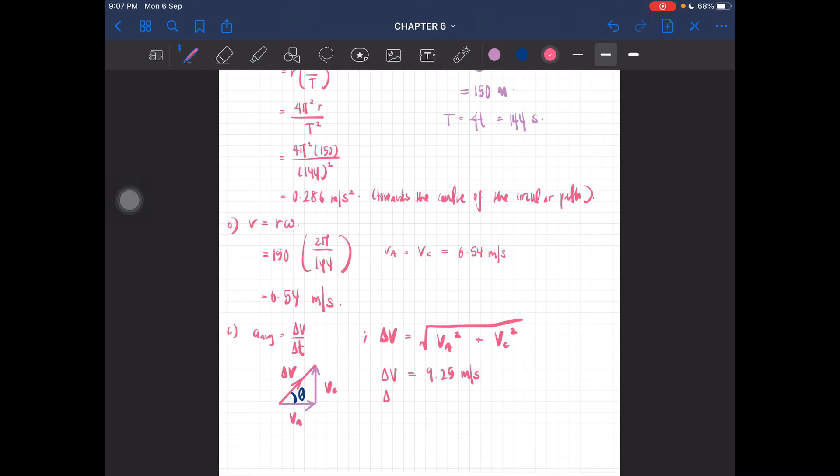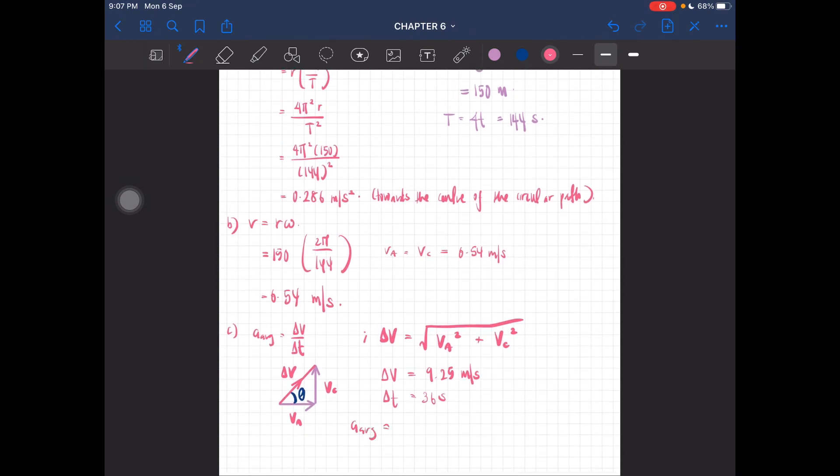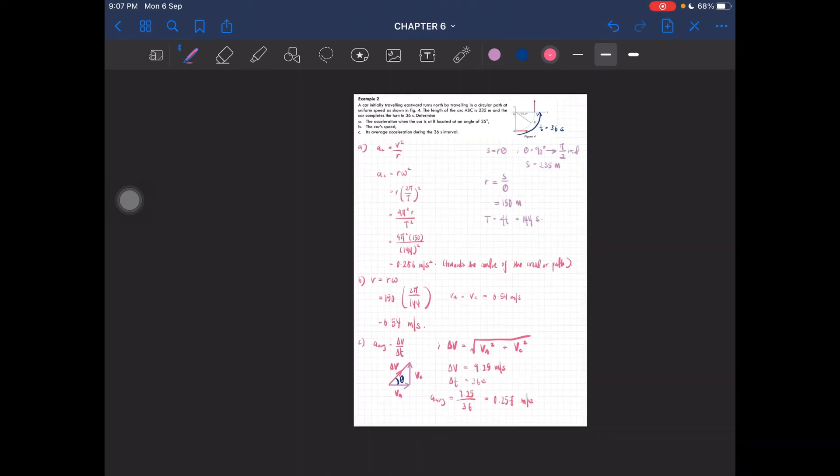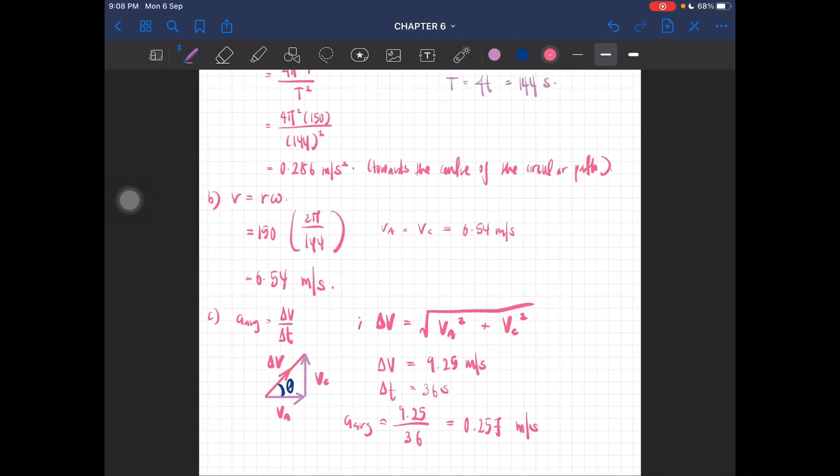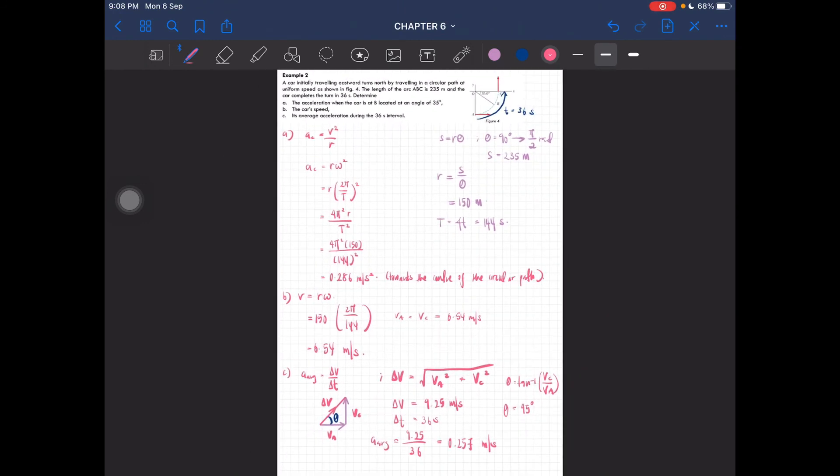If you substitute the values, you'll get 9.25 meters per second as the change in velocity. Delta t is 36 seconds, so just substitute: 9.25 divided by 36, which gives 0.257 m/s². Remember, acceleration is a vector, so it has direction, which is tan⁻¹(vC/vA), giving 45 degrees as the direction of the change in velocity.